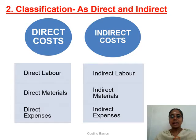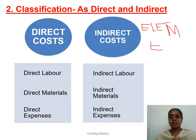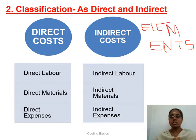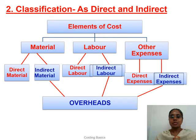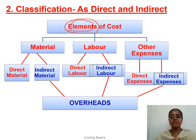Within that, we can again classify based on traceability as direct and indirect: direct labor, direct materials, direct expenses, and indirect labor, indirect material, indirect expenses. These are called the elements of cost. So when asked for elements of cost, you should include traceability as well. Another word for indirect material, labor, and expenses is overheads.